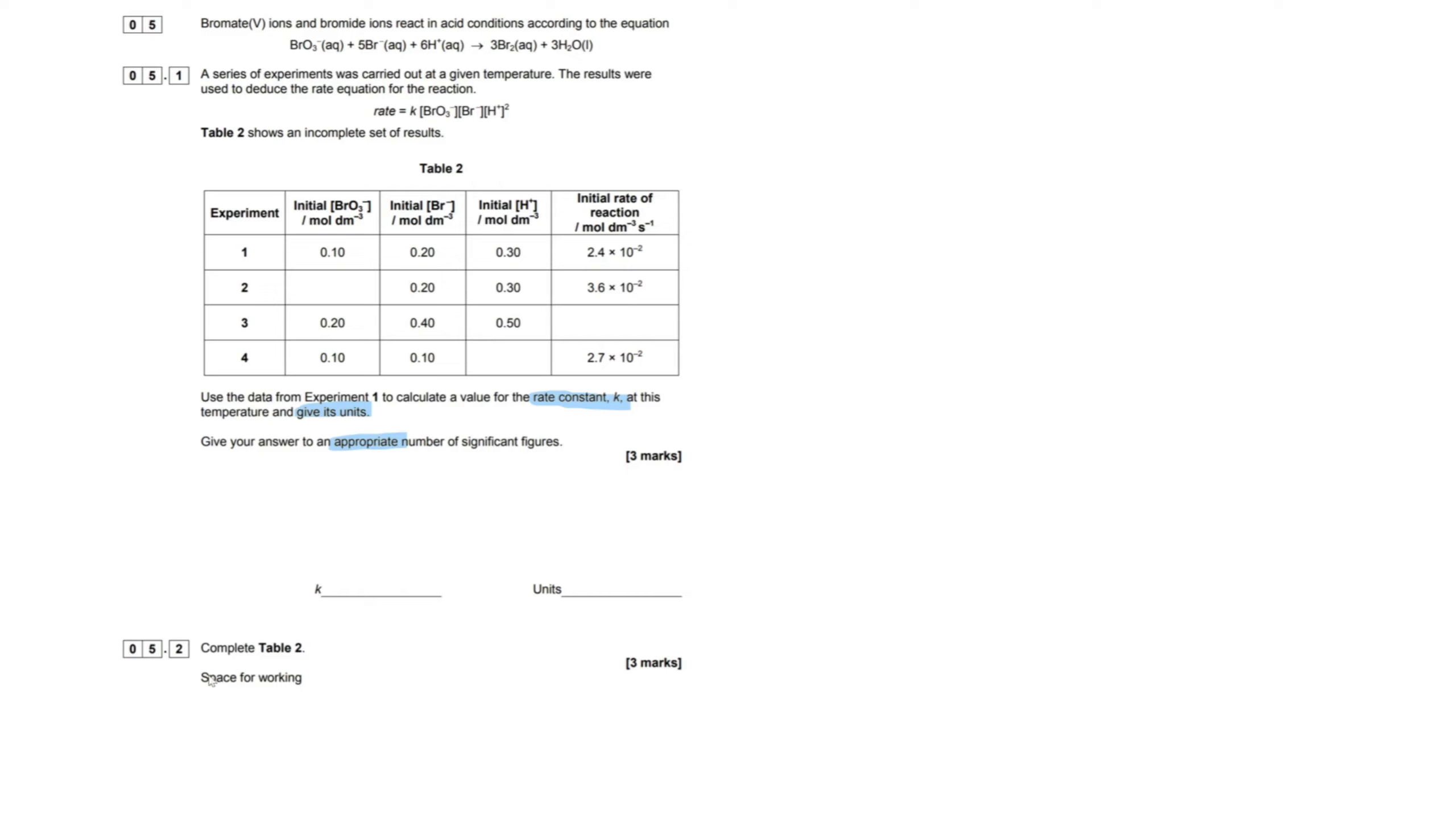Now, when we come on to question 5.2, when we have to complete the table, this is where things get a bit backwards, where you have to use the rate equation to work out the missing values here. Normally what you would do is you are not given the rate equation and you have to ultimately calculate everything and then lead to that forming a rate equation. But this first question right here, really easy. They've told us step by step what to do. We have to use experiment 1 to calculate k. So all that involves is a little bit of rearranging ability.